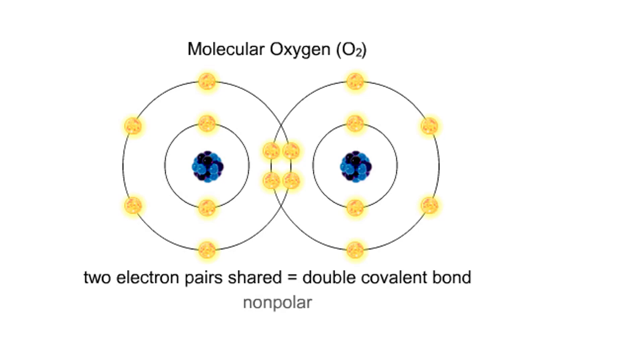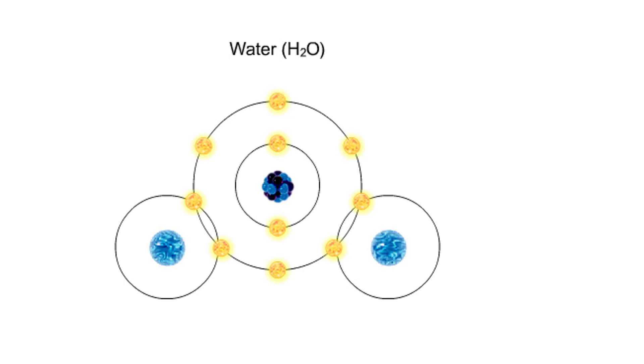Alternatively, an oxygen atom can share electron pairs with two hydrogen atoms. Each hydrogen atom shares a single pair of electrons with the oxygen. The molecule is held together by two single covalent bonds. An oxygen nucleus has more protons than a hydrogen nucleus, and so attracts the shared electrons more strongly. This unequal sharing gives the oxygen end of the atom a slight negative charge, and the hydrogen end a slight positive charge. We say that water is held together by polar covalent bonds.